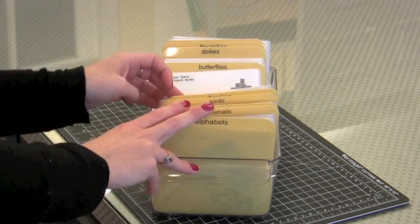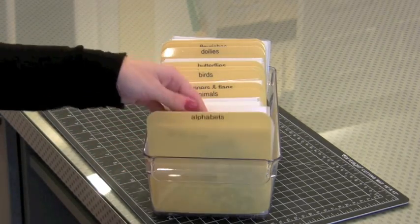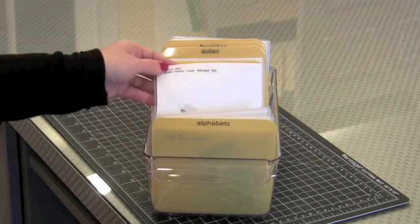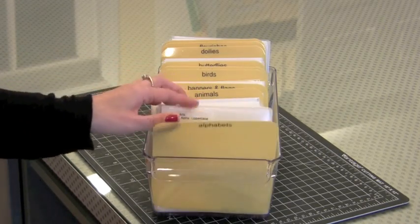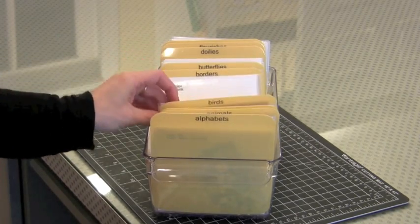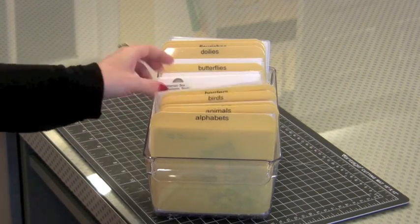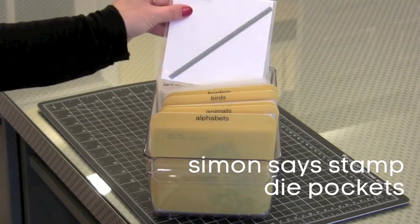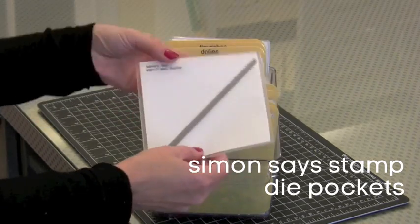You can see I have them divided up into categories by alphabetical order. This works for me, but you could go by manufacturer if you wanted to. I use these little Simon Says Stamp die pockets. I really like these pockets because they are just the right size for most dies. You can even put a border die in there on a diagonal and it works fine.